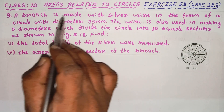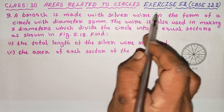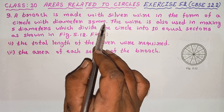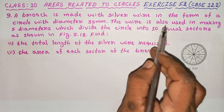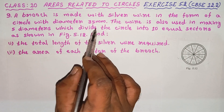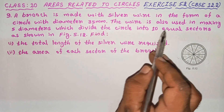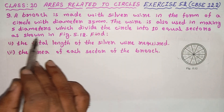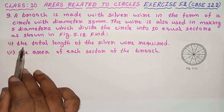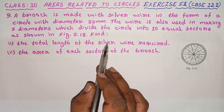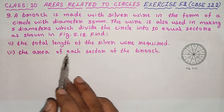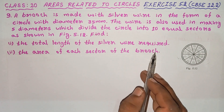A brooch is made with silver wire in the form of a circle with diameter 35 mm. The wire is also used in making 5 diameters which divide the circle into 10 equal sectors, as shown in figure 5.12. Find: first, the total length of the silver wire required; second, the area of each sector of the brooch.